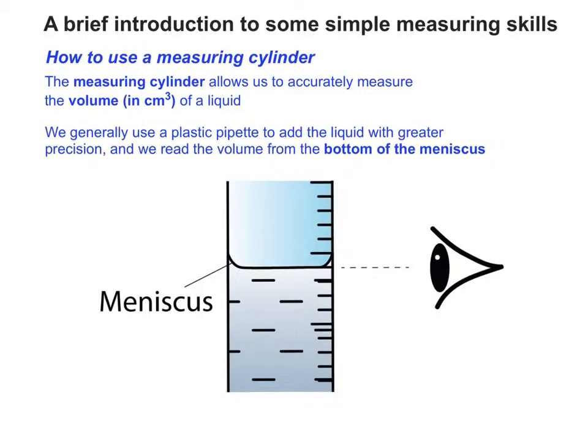When you read the meniscus, the meniscus is basically where the top of the liquid sits, and there's a slight curve upwards where it comes into contact with the inside of the measuring cylinder. So it's very important that your eye is at the level of the bottom of the meniscus, as can be seen in the diagram.